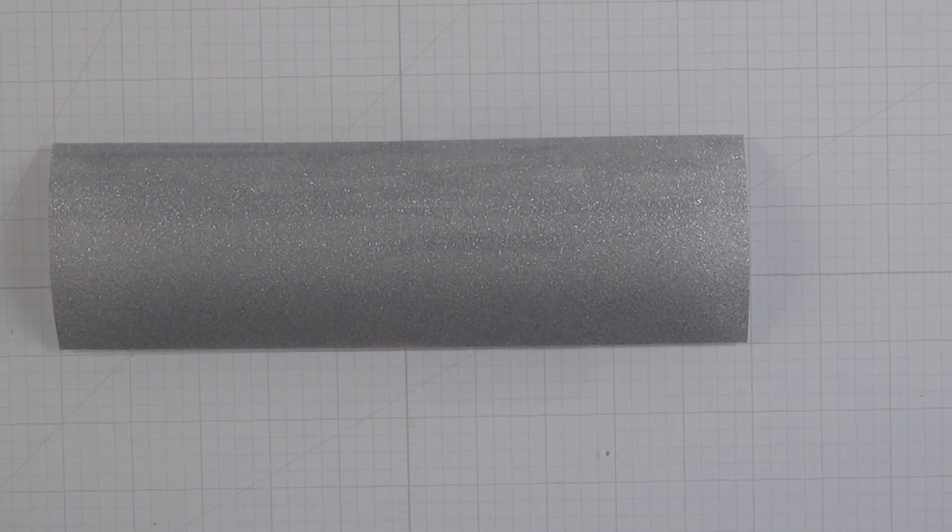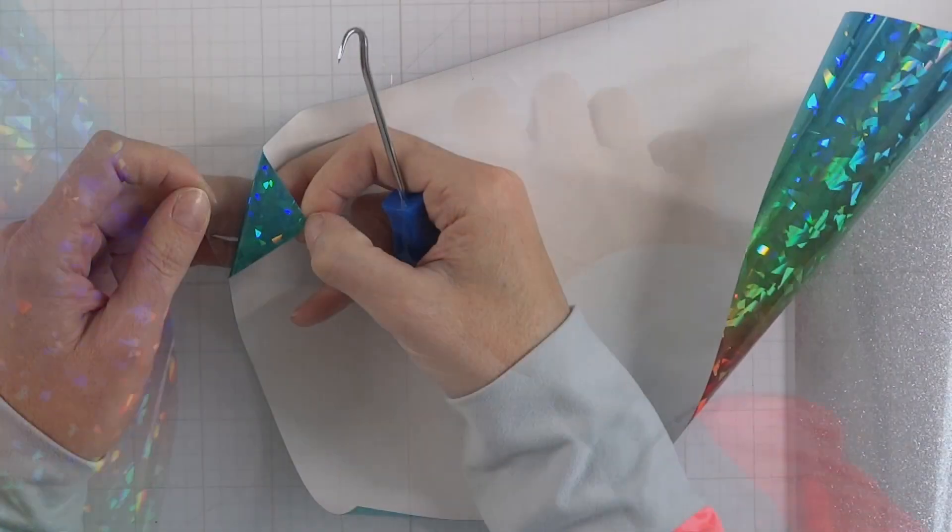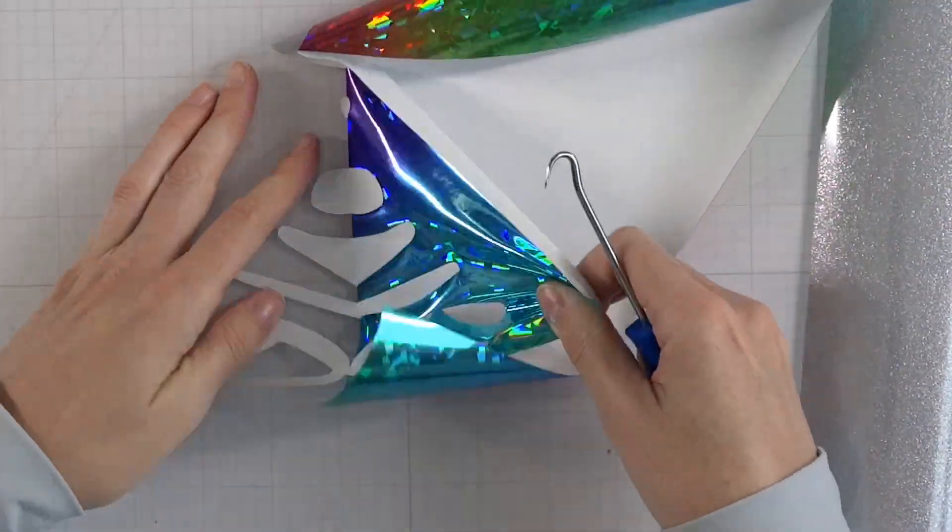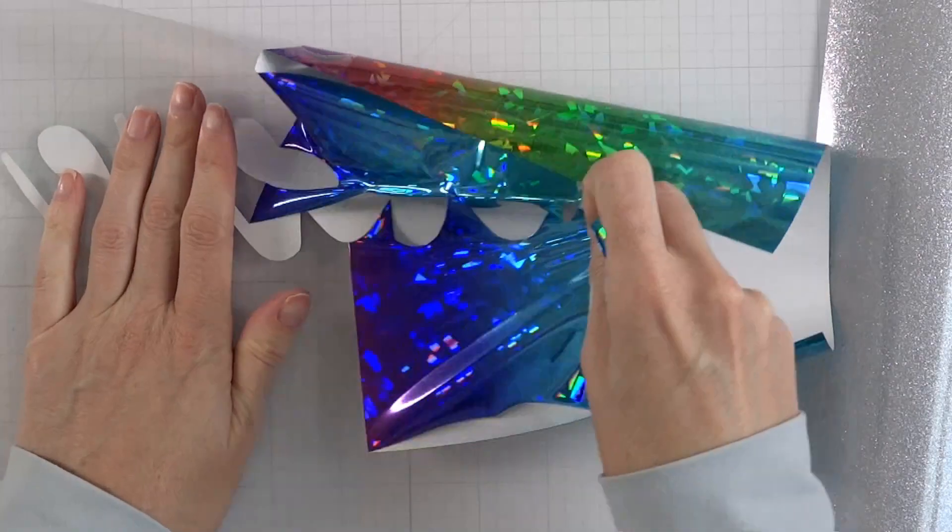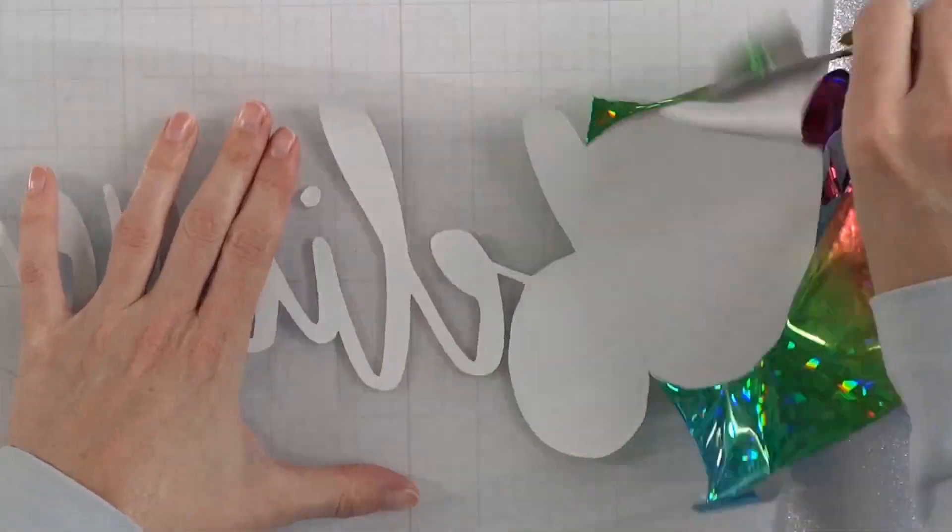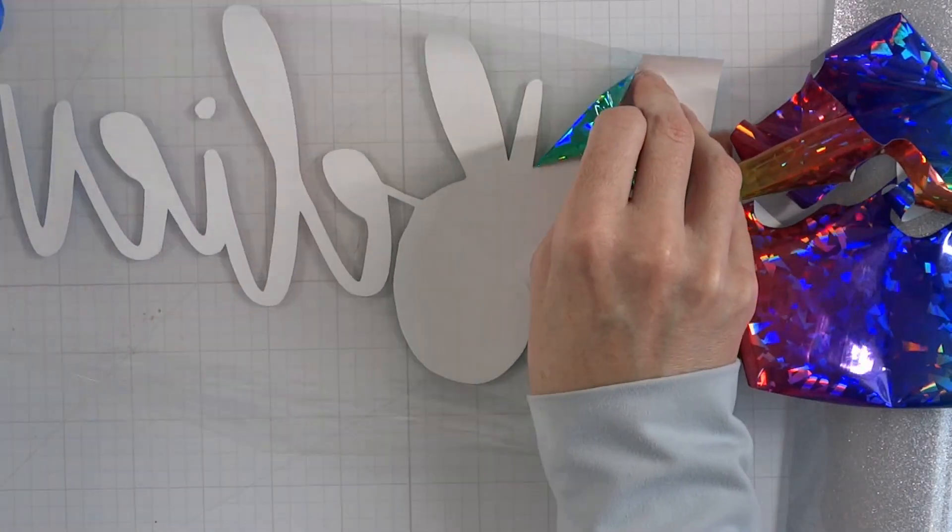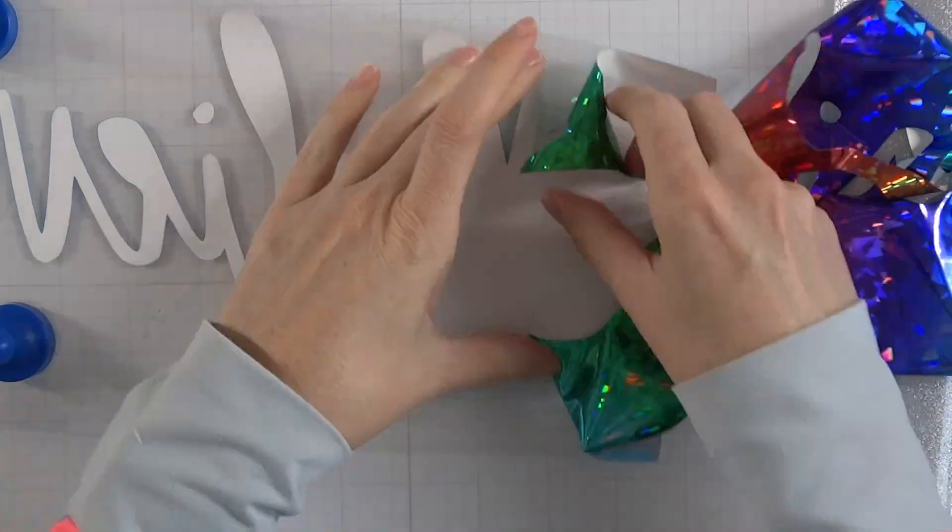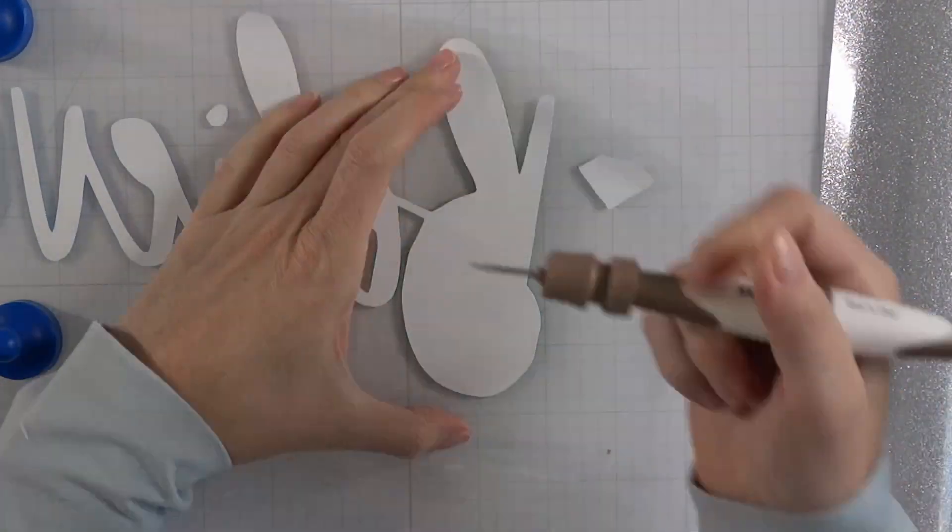You can cut down your iron-on vinyl to size before you even put it on your mat. Now I'm doing what's called weeding, and I'm pulling away all the excess. If I was thinking about this, I would have cut that out because you can save those little pieces.